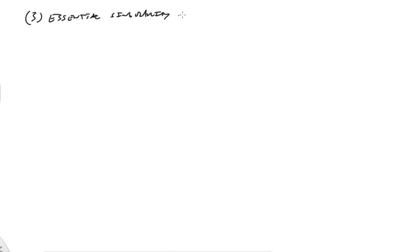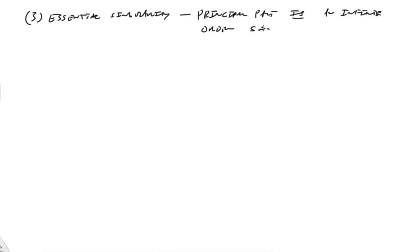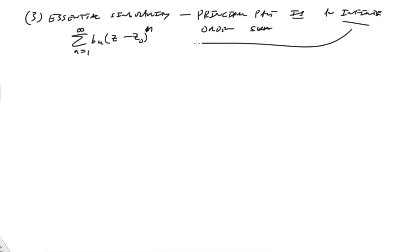The third type is called an essential singularity, and that is where the principal part is an infinite-order sum. The principal part truly is an infinite sum — we can't truncate it; it has to start at n equals 1 and go on forever.